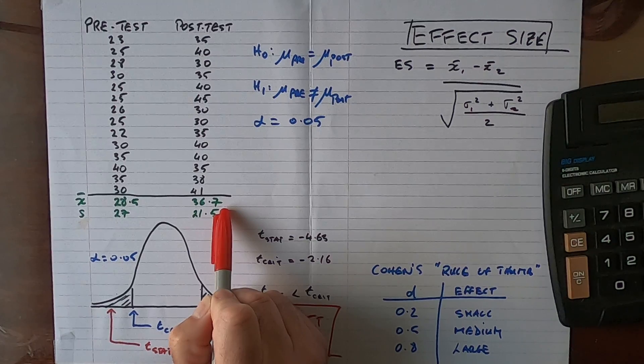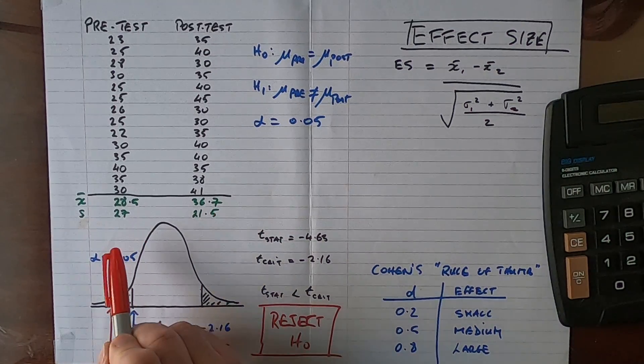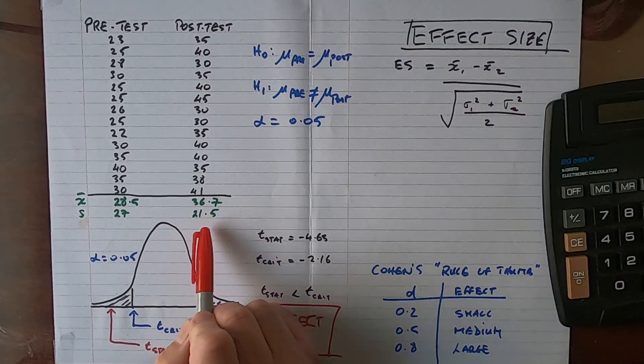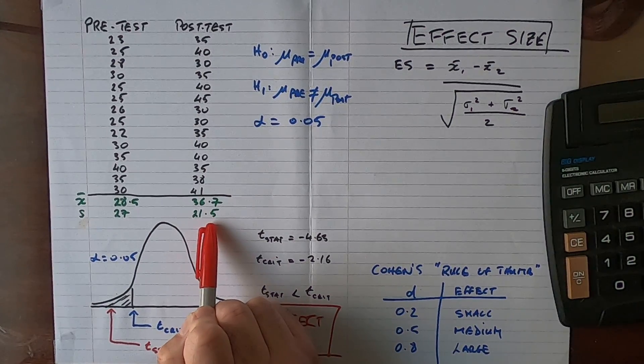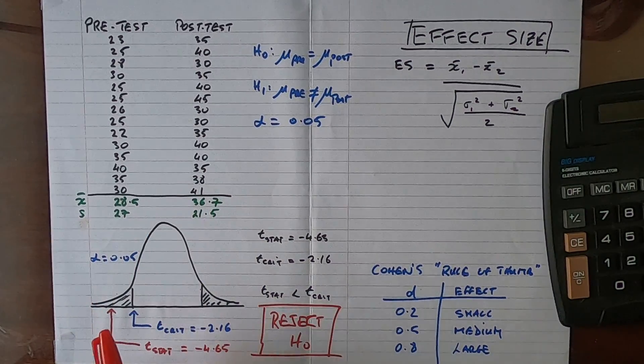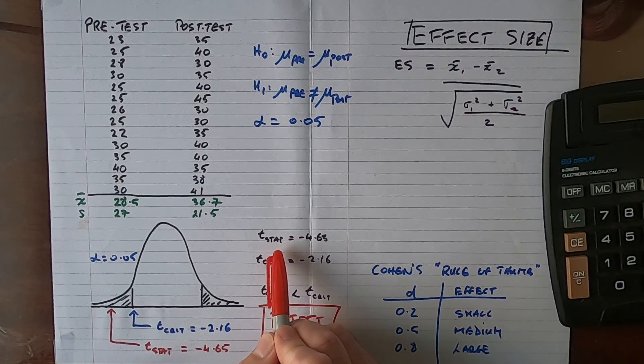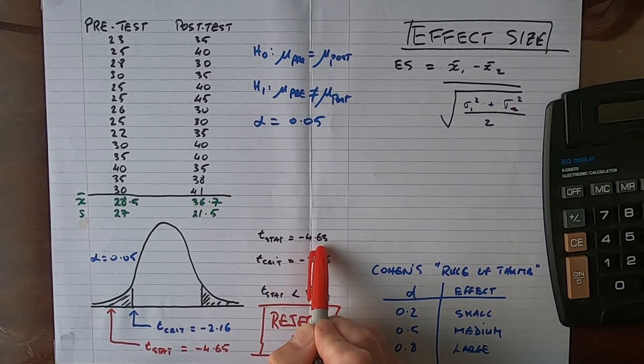That's a strong indicator that we have an effect here. The variance for the pre-test score was 27 and 21.5 for the post-test. We're going to need those values in a few moments. When I conducted the t-test, the test statistic was minus 4.63.